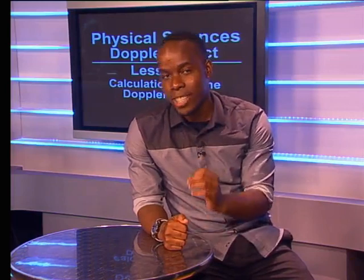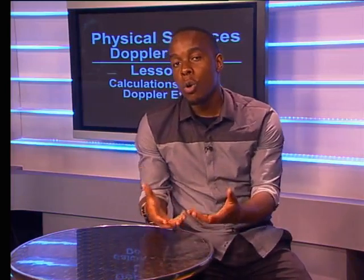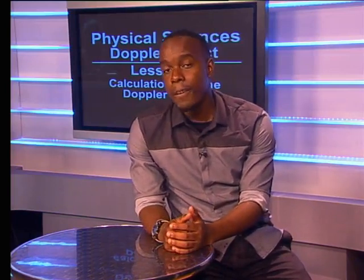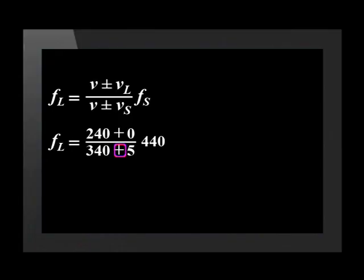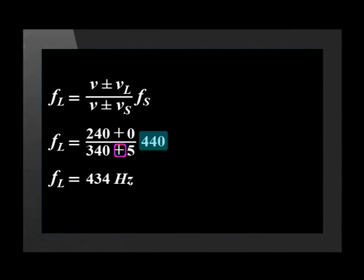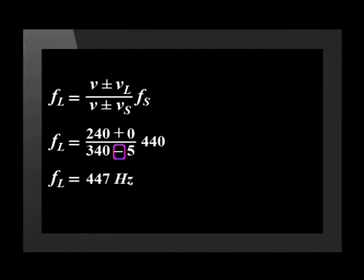Let's see what impact these changes have on the frequency heard by the listener. When the source moves away from a stationary listener, the velocity of the source is positive and the frequency heard decreases. In the Tabo example, when Tabo moves away, the frequency heard was 434 Hz, which is less than the source frequency of 440 Hz. In the second calculation, the velocity of the source became negative when moving towards the listener and the frequency heard increased — 447 Hz, which is greater than 440 Hz.